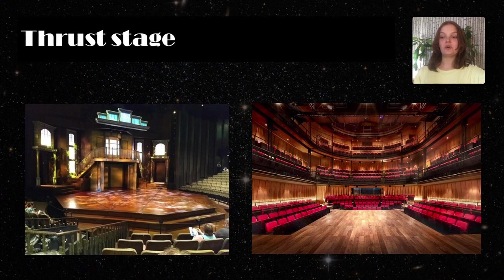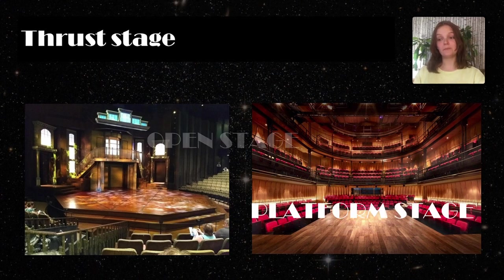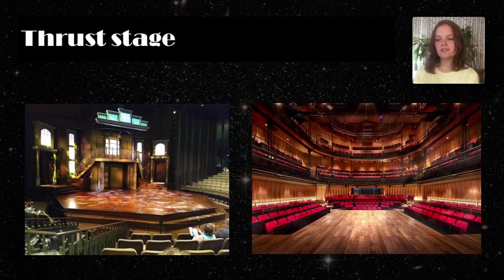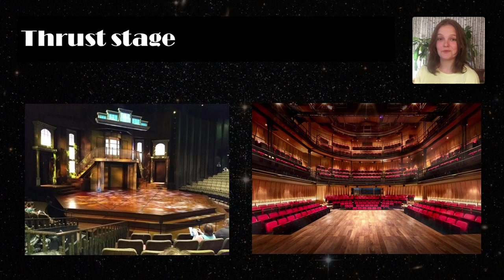A thrust stage, also known as a platform stage or open stage, reaches from a wall into the audience. The audience can sit around it on three sides because it extends beyond the proscenium. Just like arenas, thrust stage productions are designed with a multiple-sided audience in mind, guaranteeing that no action is missed. While an actor might occasionally have their back to one side of the audience, directors aim to balance all elements of the performance so the audience doesn't miss anything.